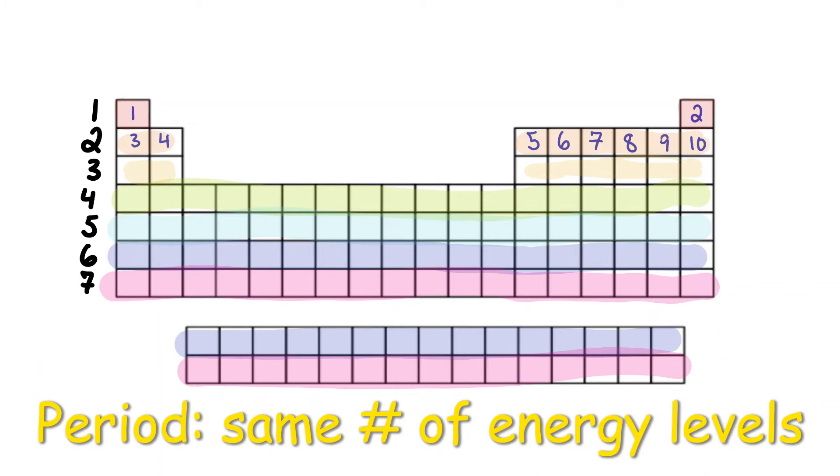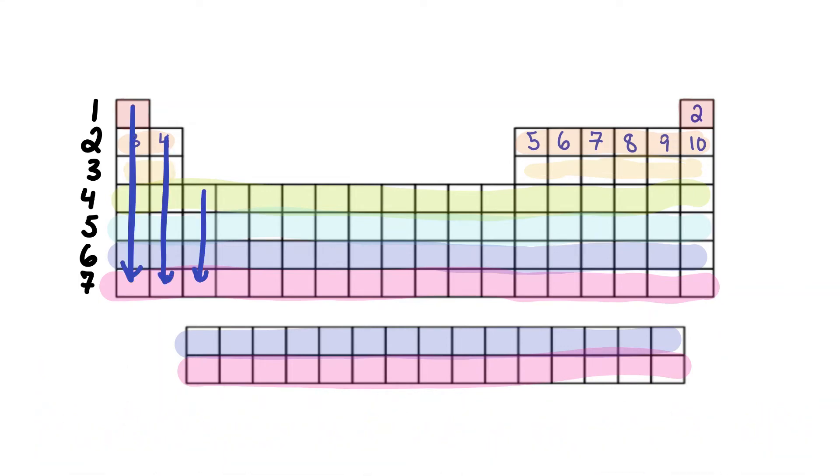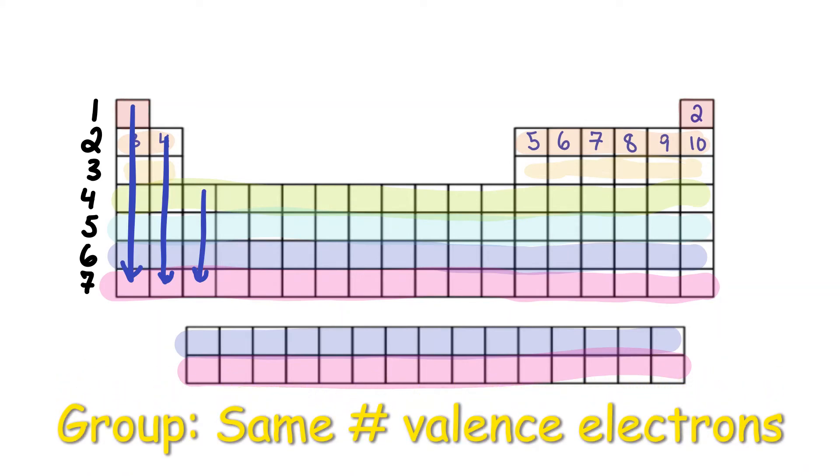The columns going down the periodic table are called groups. Elements in the same group have the same number of valence, or outermost, electrons, but have different numbers of energy levels.